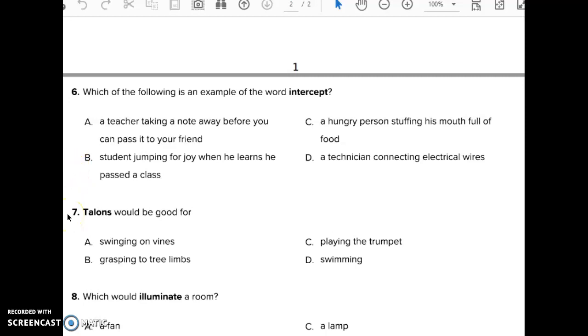Number 7. Talons would be good for: A: swinging on vines. B: Grasping to tree limbs. C: Playing the trumpet. D: Swimming.